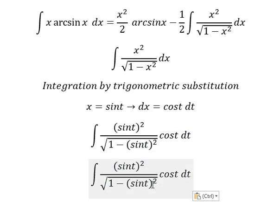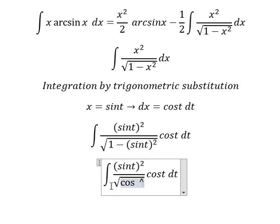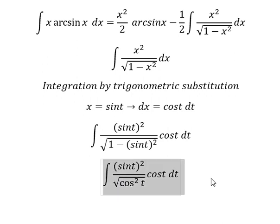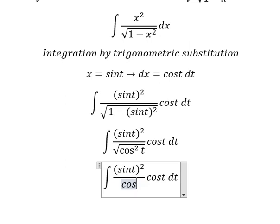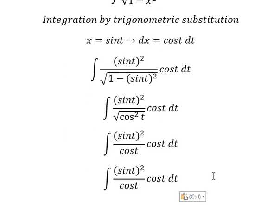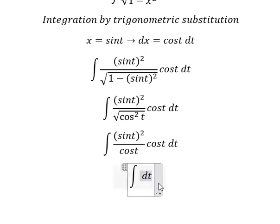So the square root of cos²(T) gives us cos(T). Now cos(T) and cos(T) cancel each other, simplifying the integral.